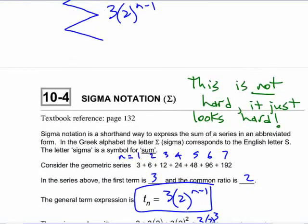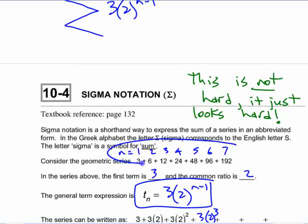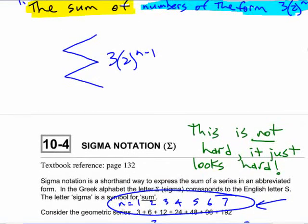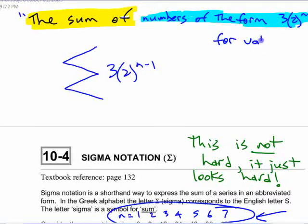But we need one more thing here. We need to know something to do with this. We need to know what values of n we're talking about. For values of n from, what to what? From one to seven.